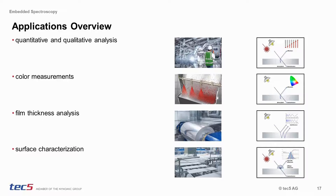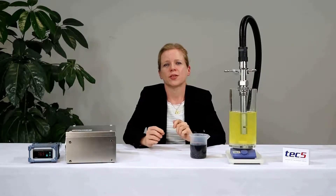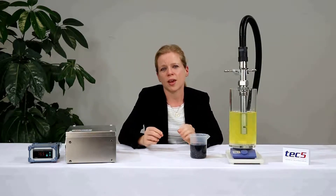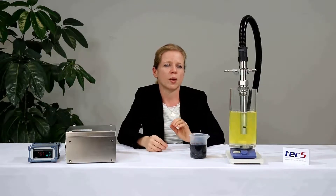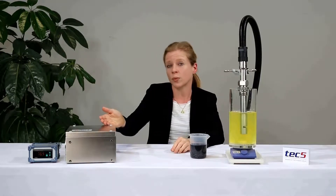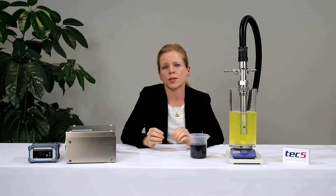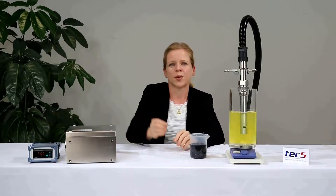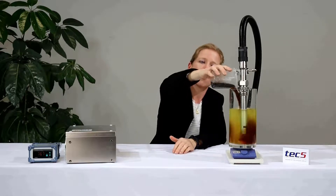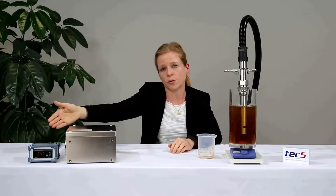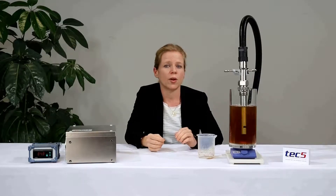We will now proceed with a live presentation on how our embedded spectrometer systems are used. In this example, we are analyzing a product with a fiber-coupled transmission probe in an operation mode with constant data acquisition. To determine the actual concentration of a specific ingredient, the spectra are pre-treated and chemometrically analyzed on board, in real-time and without an external controlling PC. The system is communicating the result to a process control system, represented by this display. When we now add a second component, you can see that the result changes immediately and is transferred to the process control system. Typical applications are quality control or process monitoring.